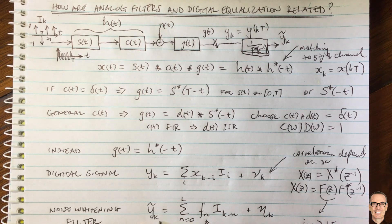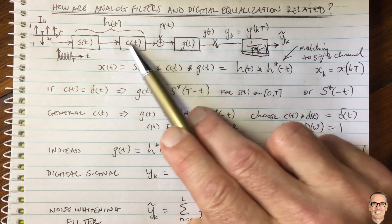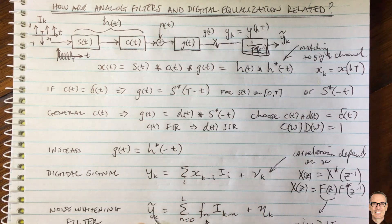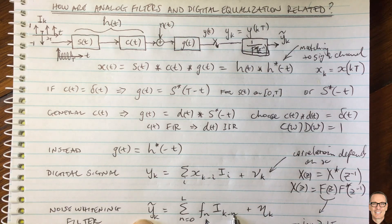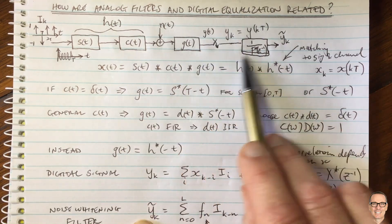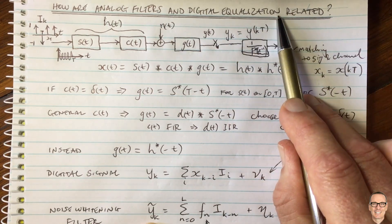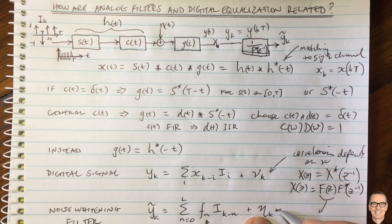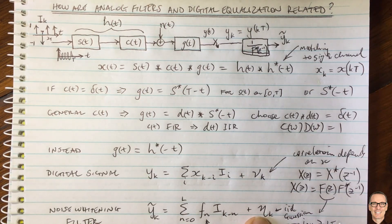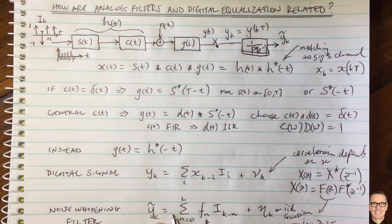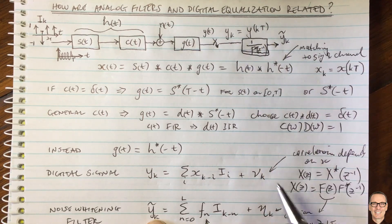After applying the noise whitening filter, we arrive at the classic digital communications baseband representation. The received signal has inter-symbol interference components because the channel smoothed data across time: y_k has a component of I_k but also I_{k−1}, I_{k−2}, I_{k−3} — previous data smoothed through the channel and corrupting current measurements. This is what necessitates digital equalization. And because we applied the noise whitening filter, the noise term is now IID Gaussian noise. This is the relationship between analog filters and digital equalization.